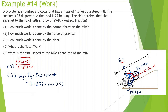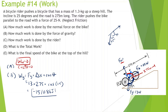The force of gravity is going down, and the displacement is going up the hill — so we know this angle is 90 degrees, and we know this angle is the same as the incline, 25. So it's 90 plus 25, which is 115. Work of gravity equals 13 times 275 times cosine of 115, and we get negative 1,510.86 joules. It should be negative because gravity is trying to pull the bicycle down the hill.